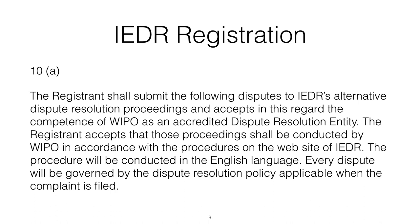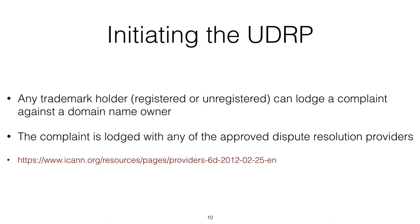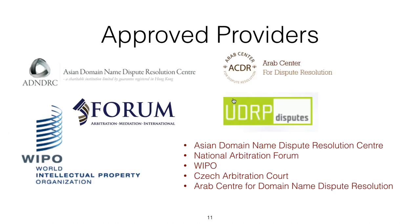Every dispute will be governed by the dispute resolution policy applicable when the complaint is filed. So if you register a .ie domain name, you are agreeing that in the event of a dispute you will accept the competence of the WIPO to make a judgment. Any trademark holder can lodge a complaint against the domain name owner, and that trademark can be registered or unregistered — that's important. The complaint can be lodged with any of the approved dispute resolution providers for that top-level domain name.